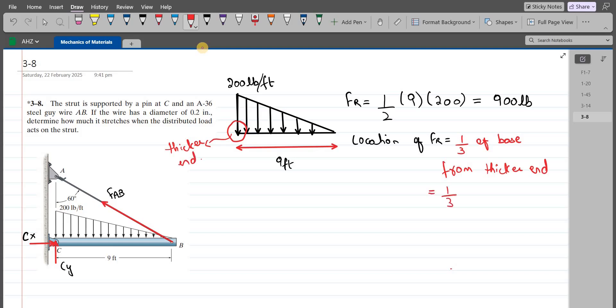We have one-third of the base, and the base is 9, so it means 3 feet from the thicker end. If I draw the resultant force, FR is 900 pounds, and it is at a distance of 3 feet from the thicker end.